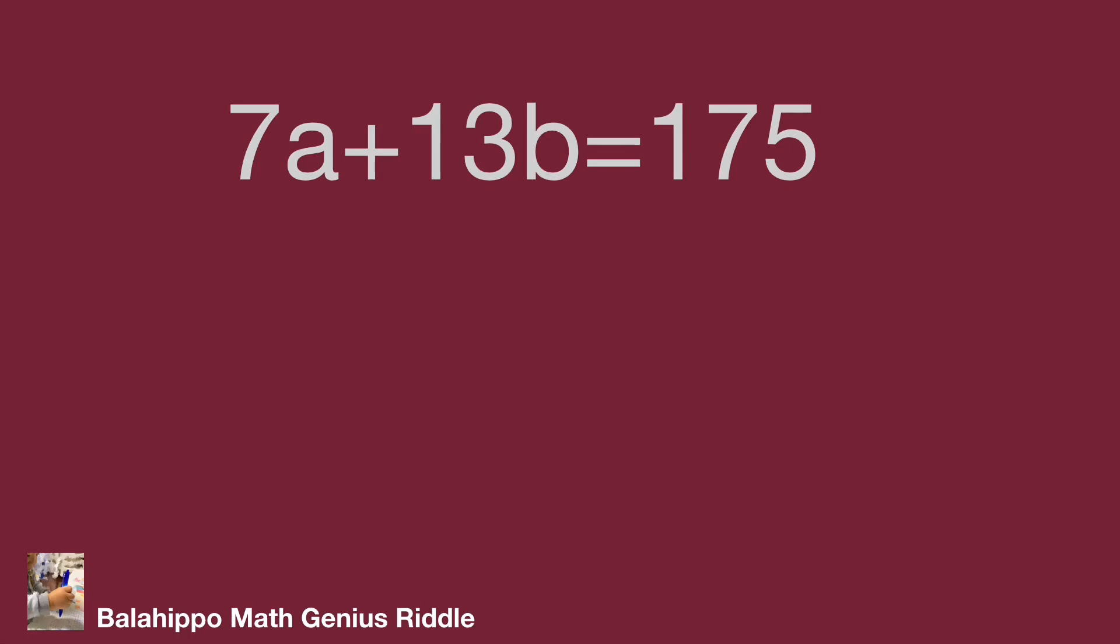We may narrow down the number range, then guess the result. Such as 7a less than 175 and 13b less than 175, we get a less than 25 and b less than 13.45, which means b less than or equal to 13.